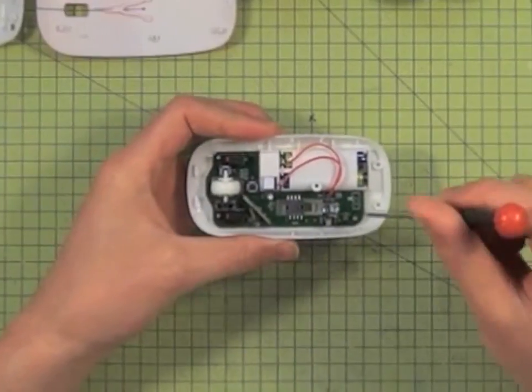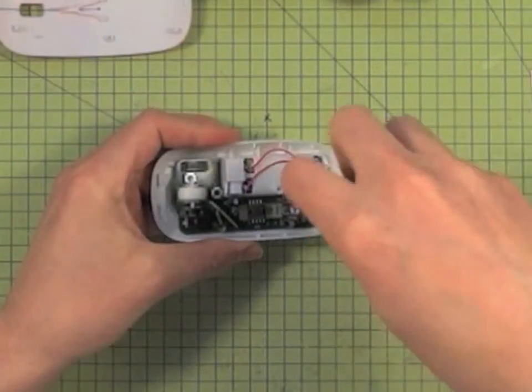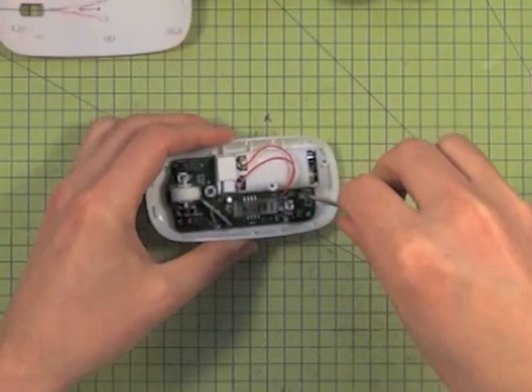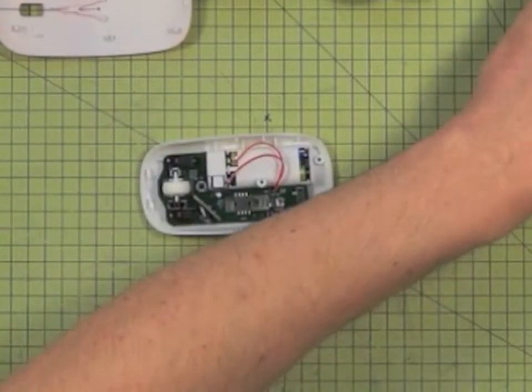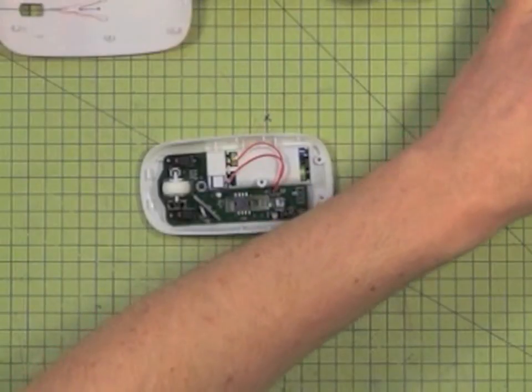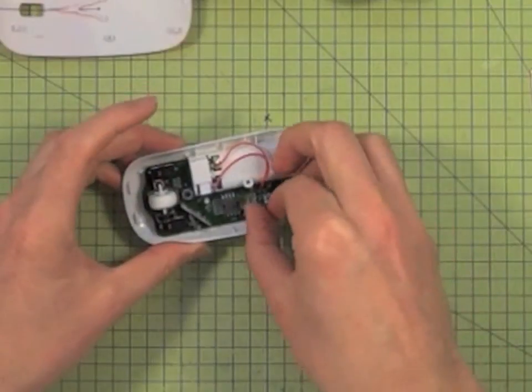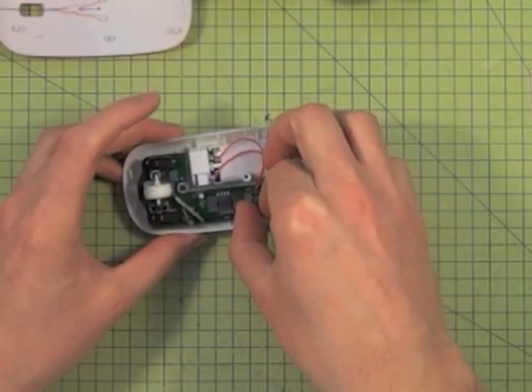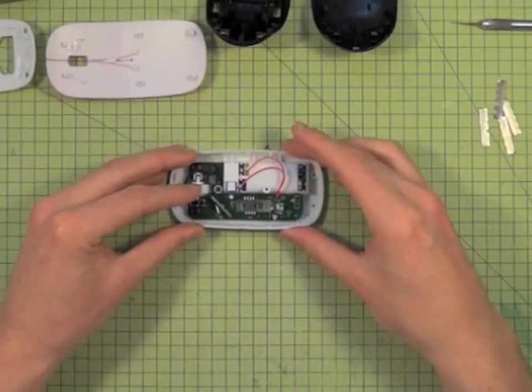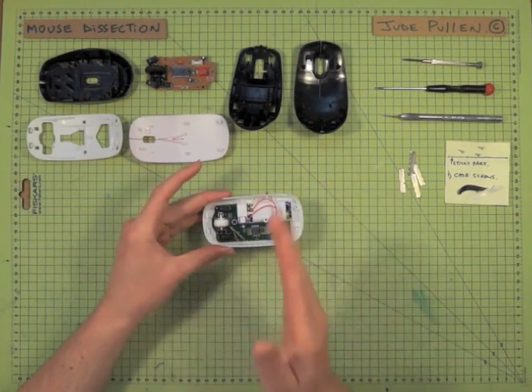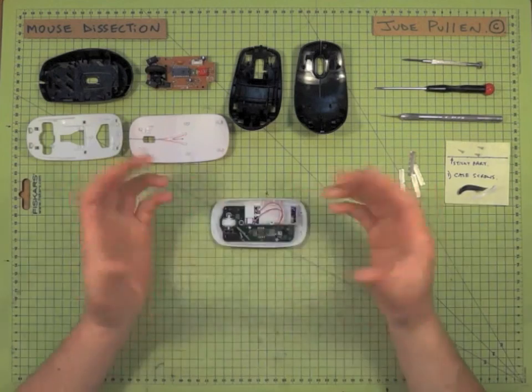So again, taking a bit of care, you might find that the PCB, in this case, is screwed together. And again, a magnetic screwdriver is always handy for these sorts of things. So keeping those over there. And as you see, that allows us now to remove the PCB. And that's pretty much us ready to roll for the next part. And we can look at how we're going to chop up all these components and reposition them in the mouse.